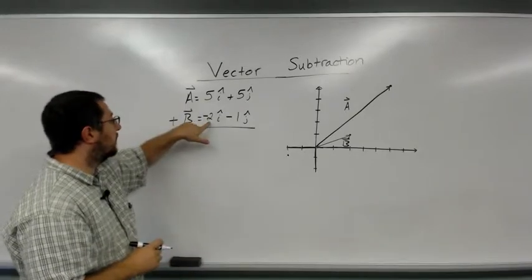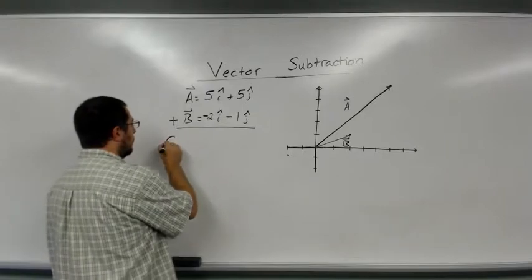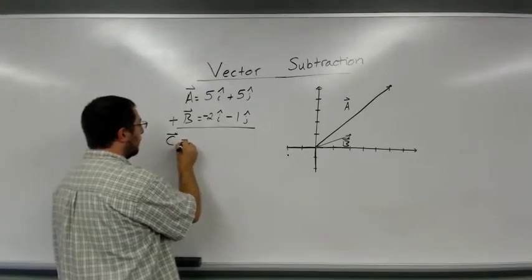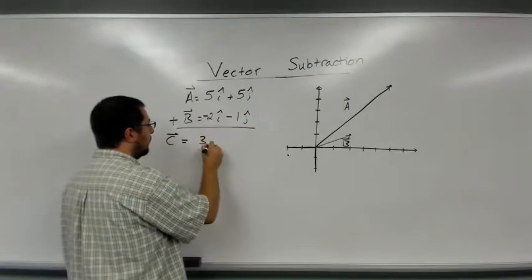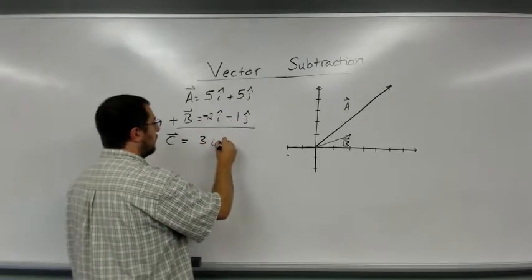So 5 plus negative 2. So the components of my new vector c are going to be 3i and 4j.